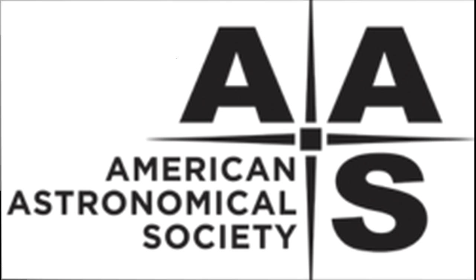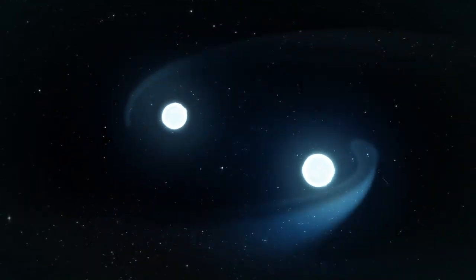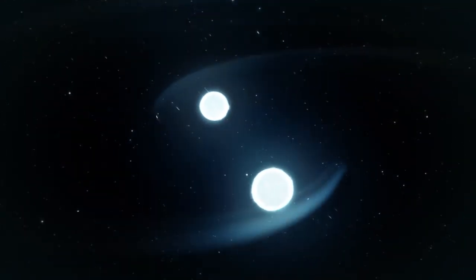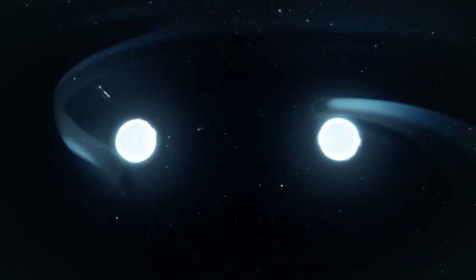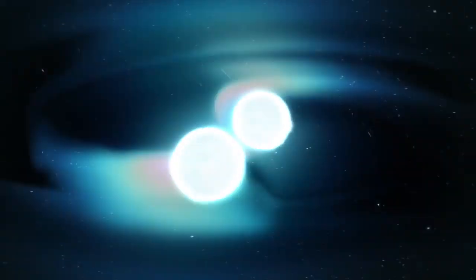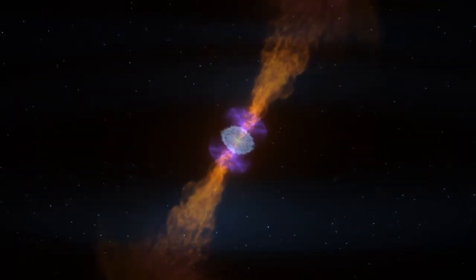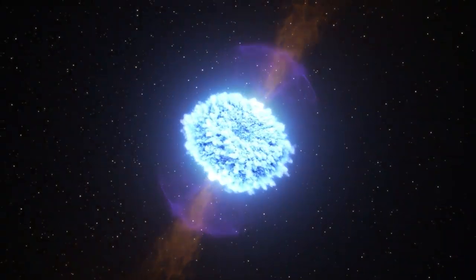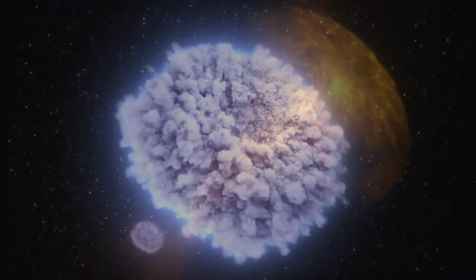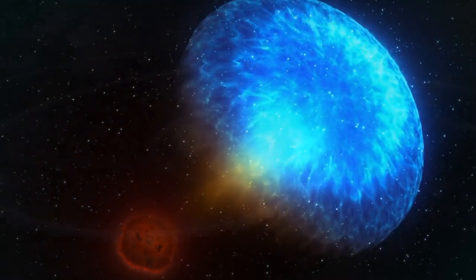Gravitational waves from collisions of massive objects typically last longer and manifest in data as a series of waves that change in frequency over time as the two orbiting objects move closer to each other. The new signal was not a series of waves, but a burst.